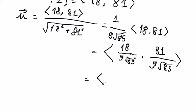So you get 2 over the square root of 85, and this one you get 9 over the square root of 85.